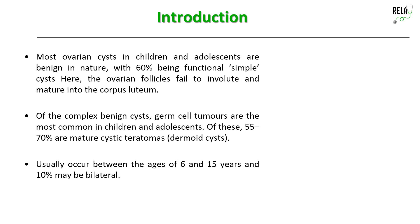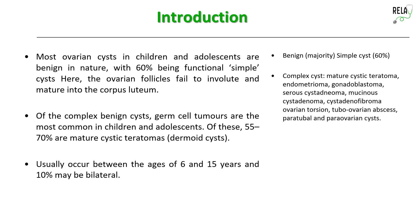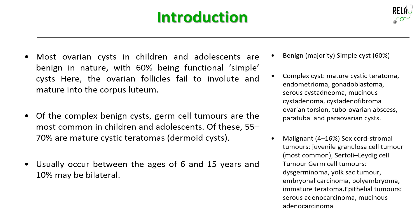Dermoid cysts usually occur between the ages of 6 and 15 years, and 10% of these dermoids can be bilateral. The classification is: firstly, benign — the majority — also called simple cysts; secondly, complex cysts, which include mature cystic teratomas, endometriomas, gonadoblastoma, mucinous or cyst adenofibroma, ovarian torsions, tubo-ovarian abscess, paratubal cysts, and para-ovarian cysts.